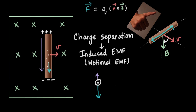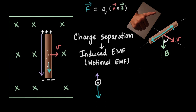As more and more electrons move towards the lower end of the rod, the negative charge at the lower end keeps increasing, which keeps growing the magnitude of the electric field. So the force on the electron due to the electric field keeps growing — it starts very little and gradually increases. It reaches a point at which it completely balances the Lorentz force, and that is when the electrons stop moving. That is when we have reached the maximum value of Motional EMF, which is BVL.